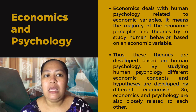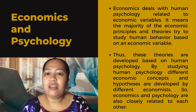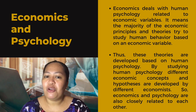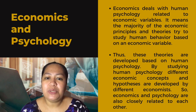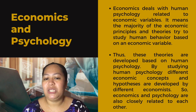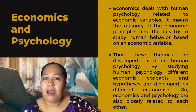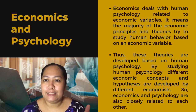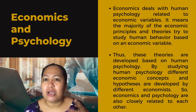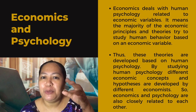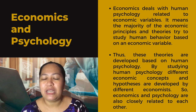Next is economics and psychology. Economics deals with human psychology related to economic variables. The majority of economic principles and theories try to study human behavior based on economic variables, so these theories are developed based on human psychology. By studying human psychology, different economic concepts and hypotheses are developed. Economics and psychology are closely related — psychology is the study of the human mind, and since human behavior is shaped by the mind, it directly affects the economy as well.